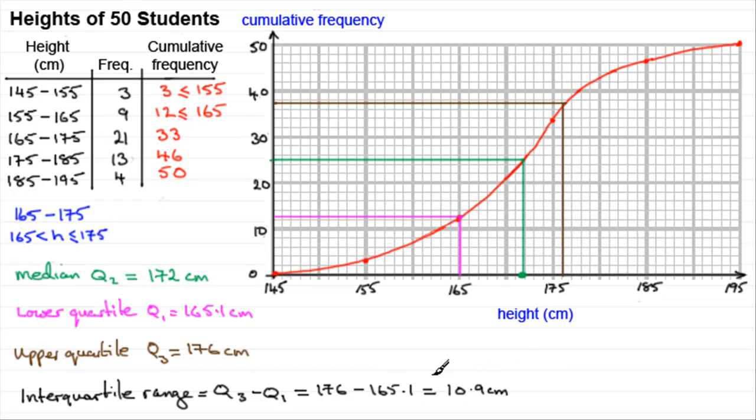Now the interquartile range is a very useful value because it tells us the width of this gap here. It tells us the spread of data about the central value here, the median. It's well worth noting that we've got 50% of our data values lie in this interval here. If it was a smaller width, there would still be 50% of our values in this channel here. So the smaller the width, the more compact the data is about the median.